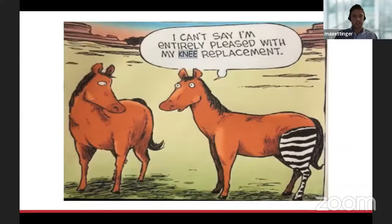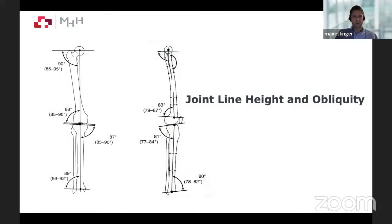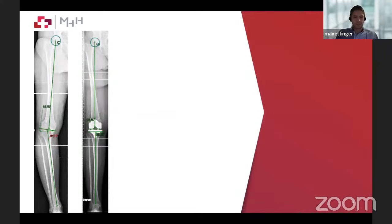What is our main problem today with knee arthroplasty patients? It's not that implants don't last long or we have high early revision rates. It's that patients are not entirely happy with their total knee — they feel uncomfortable. Patients have the feeling that the knee doesn't belong to them, and they have what we call a non-forgotten joint. This is because we don't take joint line height and joint line obliquity into account.